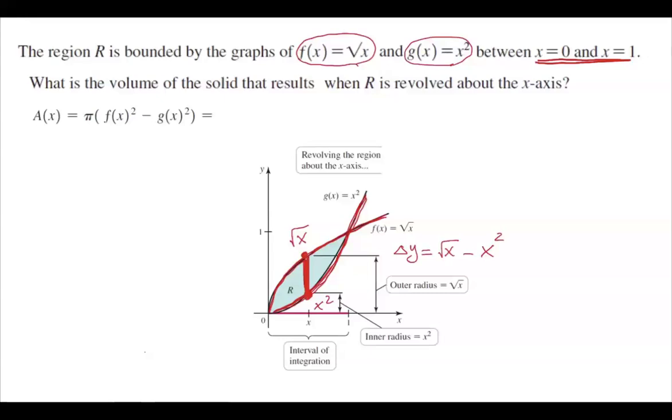Since the area of the cross section is π times the larger r squared minus the smaller r squared, this equals π times (√x)² minus (x²)². You have the outer radius and the inner radius. Please pay attention: you cannot take the Δy and raise it to the second power—it gives you a wrong answer. You have to calculate each one of these areas separately and do the subtraction.